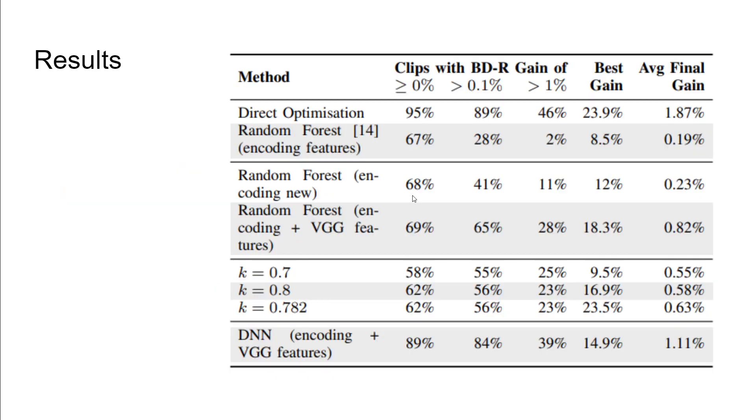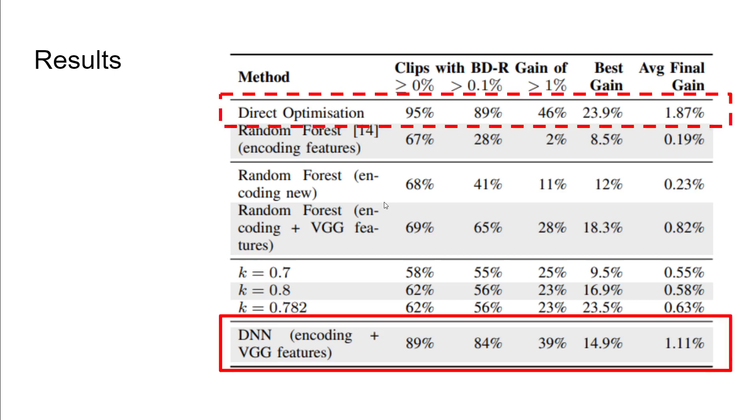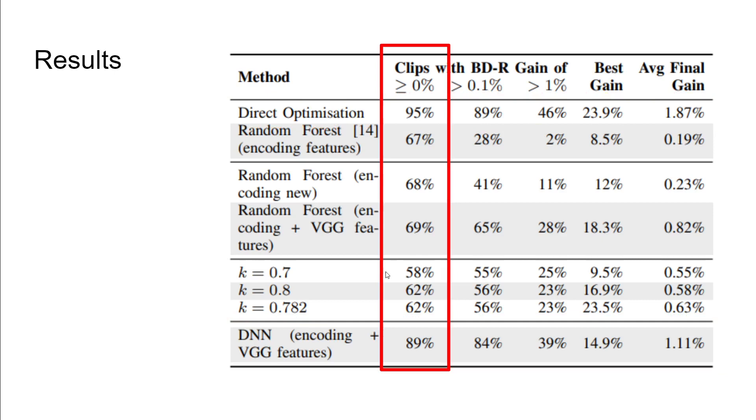We can also look at this in terms of a table. We're going to focus on our best system for this paper, which was using a DNN with features from the compressed bitstream and VGG, and compare it to how our direct optimization methods worked. The first metric is what portion of the clips had some improvement. The direct optimizer had 95% of our corpus had an improvement, whereas our deep learning system had 89% of the clips had some improvement. This is still better than our machine learning techniques from the past, as well as just using a single value consistently.